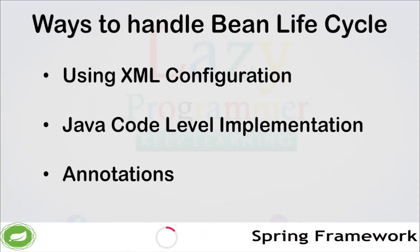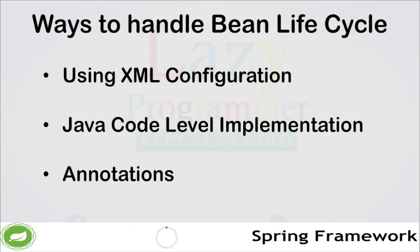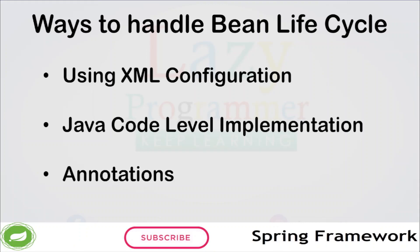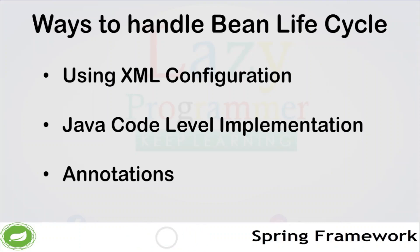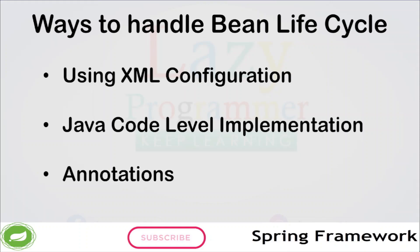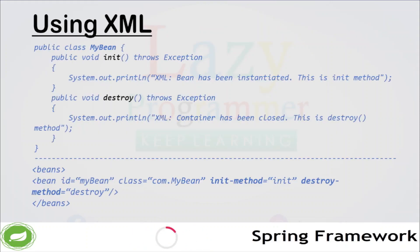Spring provides three ways to implement the lifecycle of a bean. To understand these, we will write init and destroy methods for our bean to print some message on the console — these methods are called on the start and close of the Spring container. The three ways are: using XML configuration, using Java code level implementation, and using annotations. Now let's see how to do it using XML.